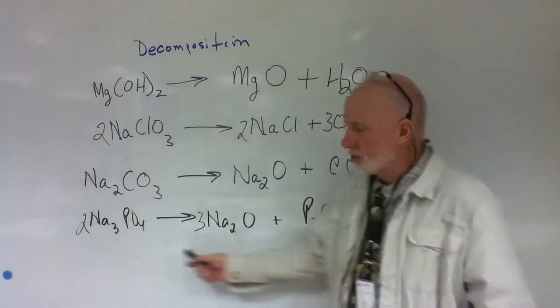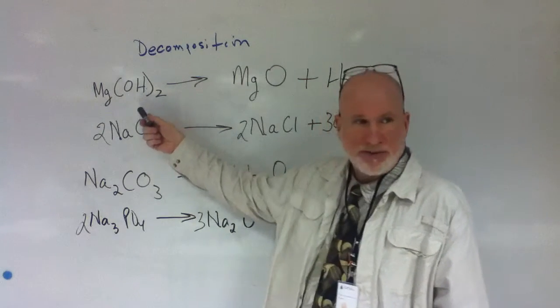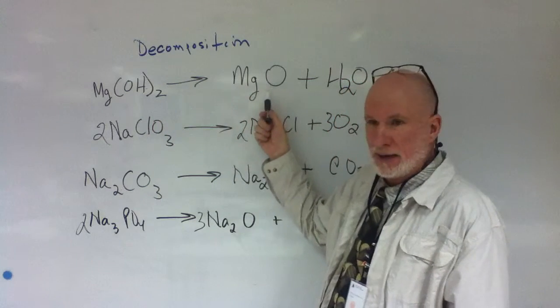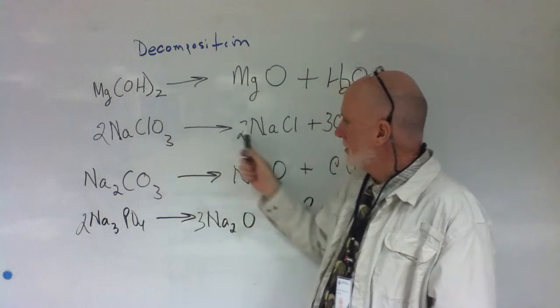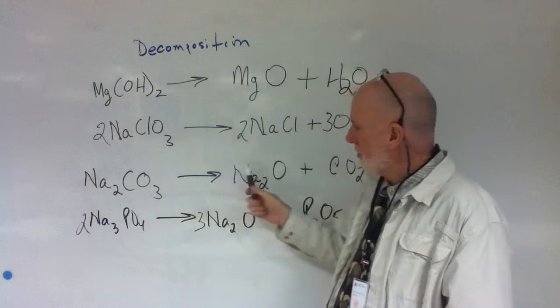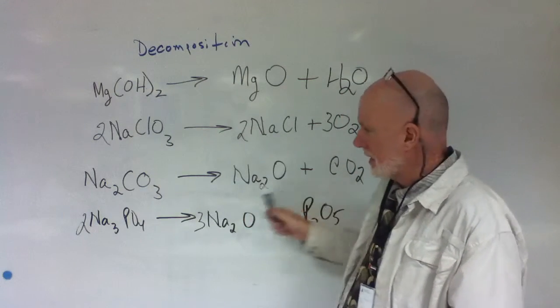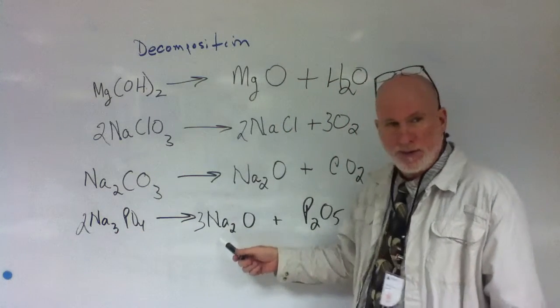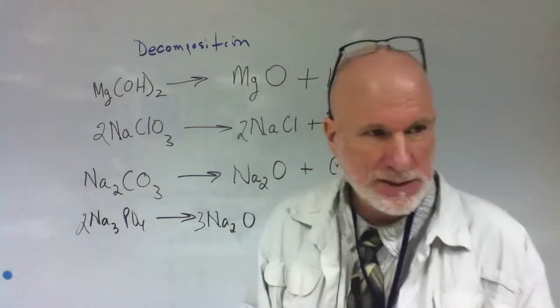A lot of books don't even include this one. So the ones that are on the board is the base to a base anhydride and water, a chlorate to the chloride and oxygen, the carbonate to the acid anhydride and carbon dioxide, and this one is any general salt to a base anhydride and an acid anhydride. Are you with me?